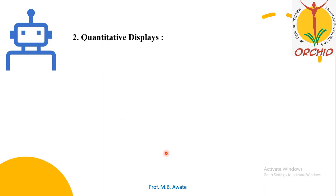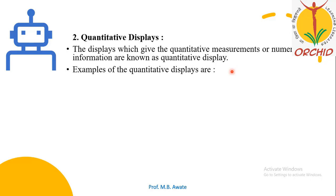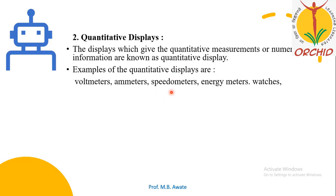Quantitative displays give quantitative measurements or numerical information. In simple words, the display gives readings in terms of numbers. Examples of quantitative displays are voltmeters, ammeters, speedometers (as seen in bikes or cars), energy meters, and watches. These are examples of quantitative displays because they give information in terms of numerical values.